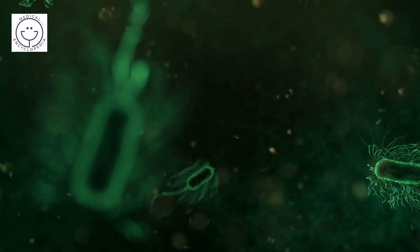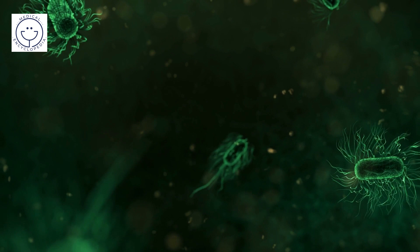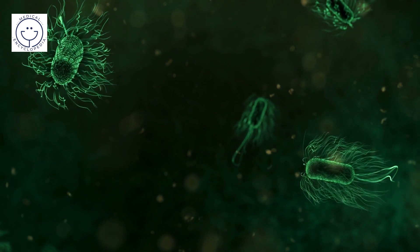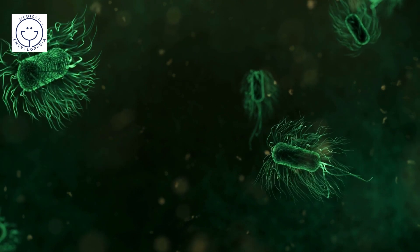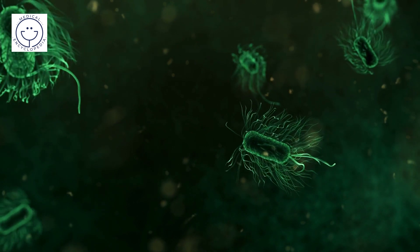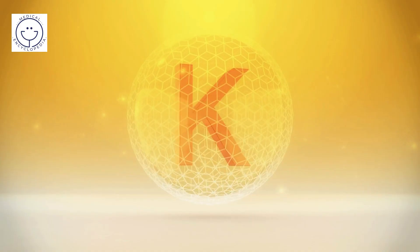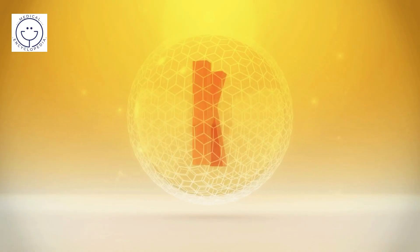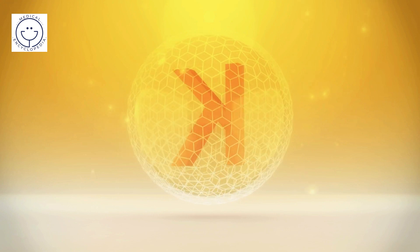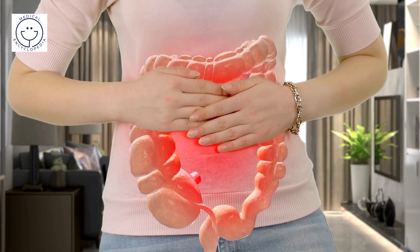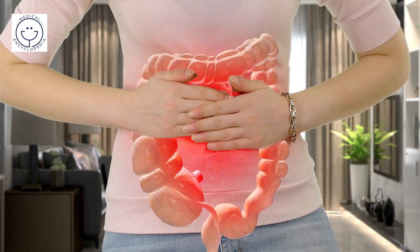Most strains do not cause disease in humans and are part of the normal microbiota of the gut. Such strains are harmless or even beneficial to humans, although these strains tend to be less studied than the pathogenic ones. For example, some strains of E. coli benefit their hosts by producing vitamin K2 or by preventing the colonization of the intestine by pathogenic bacteria.